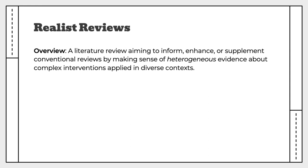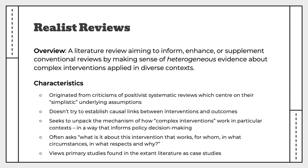This brings us to realist reviews. A realist review aims to inform, enhance, or supplement conventional reviews by making sense of heterogeneous evidence about interventions applied in diverse contexts. This type of review originated from criticisms of positivist systematic reviews, which tend to have simplistic underlying assumptions. In contrast, realist reviews don't try to establish causal links; they try to understand how complex interventions work in particular contexts. They often ask: what is it about this intervention that works, and for whom, and in what circumstances, in what respects, and why? Realist reviews view primary studies as case studies.